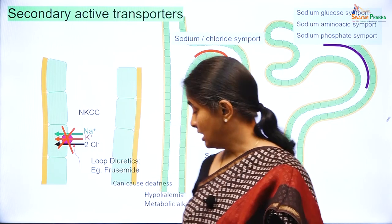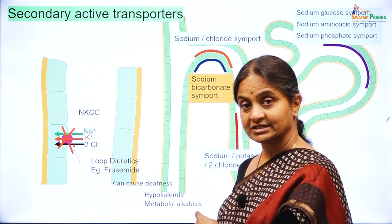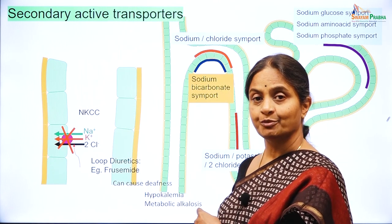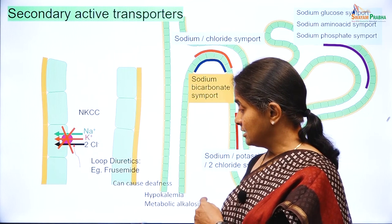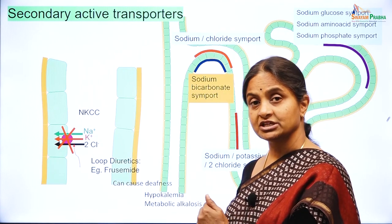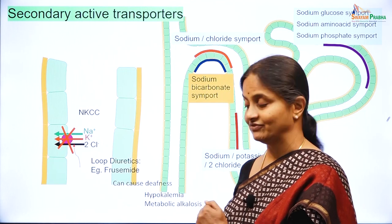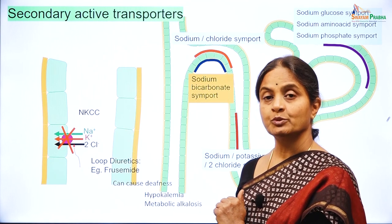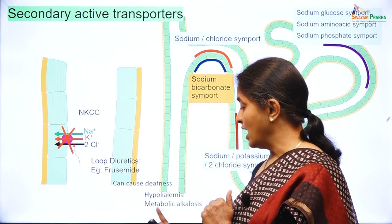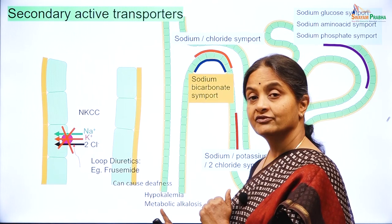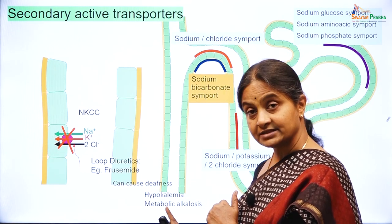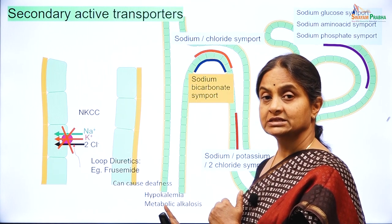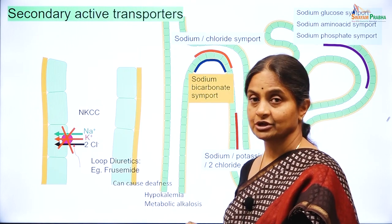Furosemide can also cause hypokalemia — a reduction in serum potassium. Serum potassium is normally between 3 to 5.5 mEq/L, and continued usage of this drug can reduce serum potassium to dangerously low levels. It can also cause an increase in plasma pH, called metabolic alkalosis. Why and how furosemide leads to these states will be seen in renal physiology.